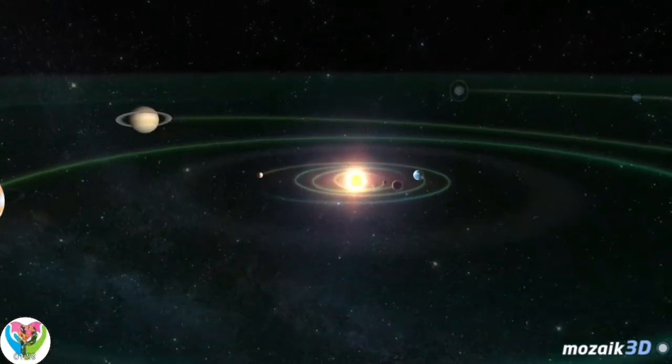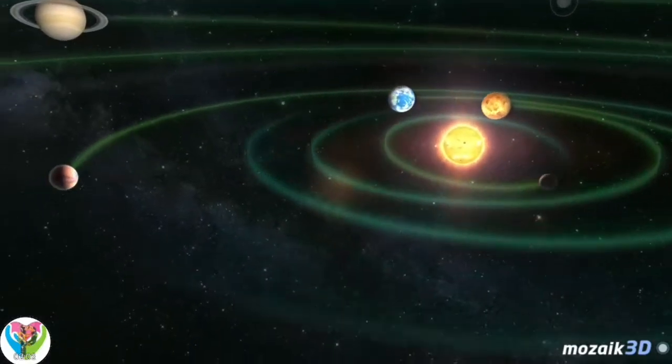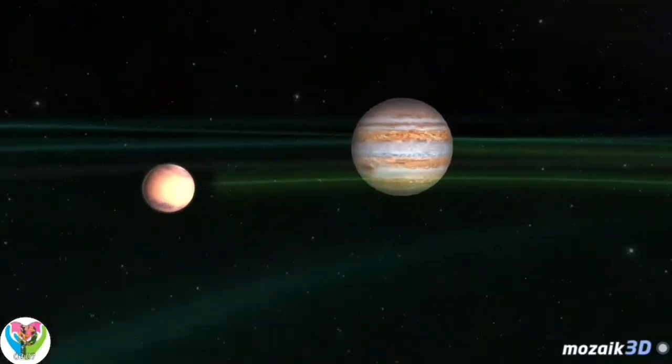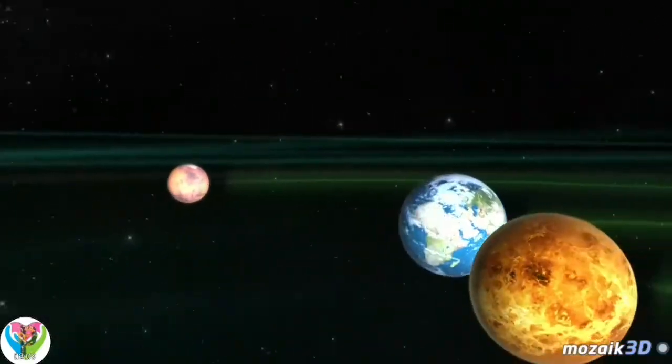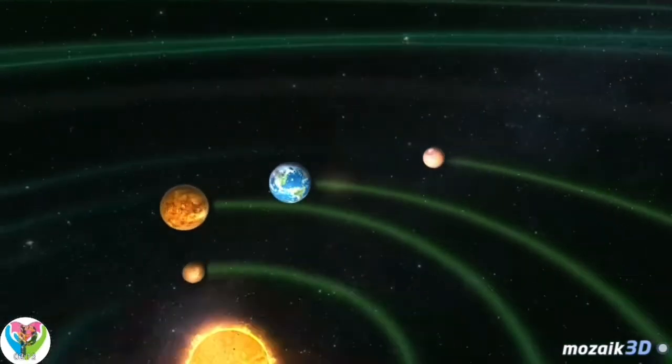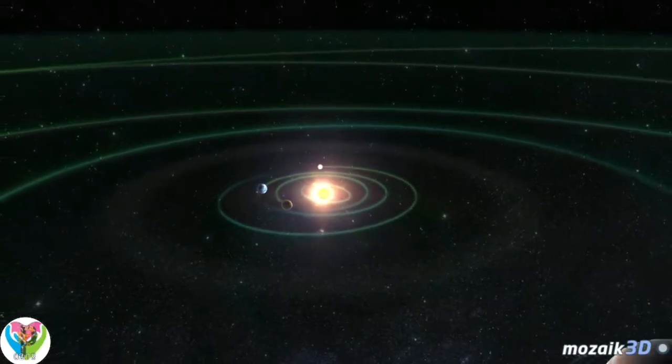Planets can be divided into two separate groups. Four terrestrial or Earth-type planets and four gas giants, also called Jovian planets. Terrestrial planets are closer to the Sun, they are smaller and denser, rotate more slowly and have thinner atmospheres and weaker magnetic fields.